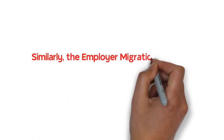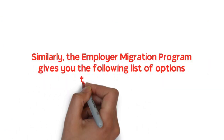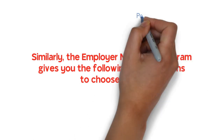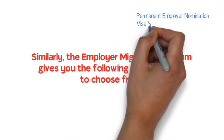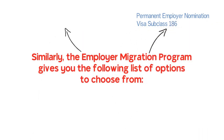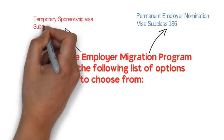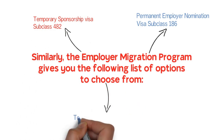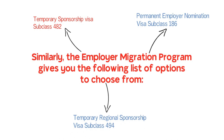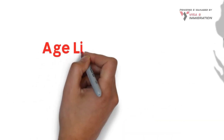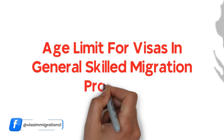Similarly, the Employer Migration Program gives you the following options: the Permanent Employer Nomination Visa Subclass 186, the Temporary Sponsorship Visa Subclass 482, and the Temporary Regional Sponsorship Visa Subclass 494. Now let's discuss the age limit for visas in the General Skilled Migration Program.